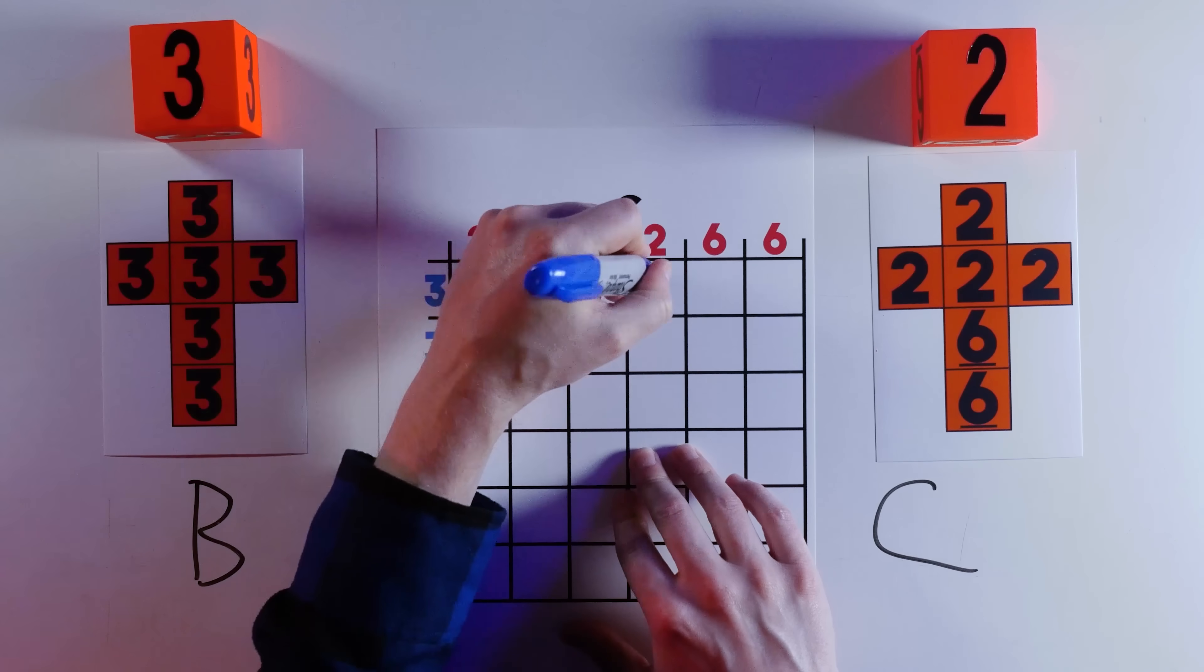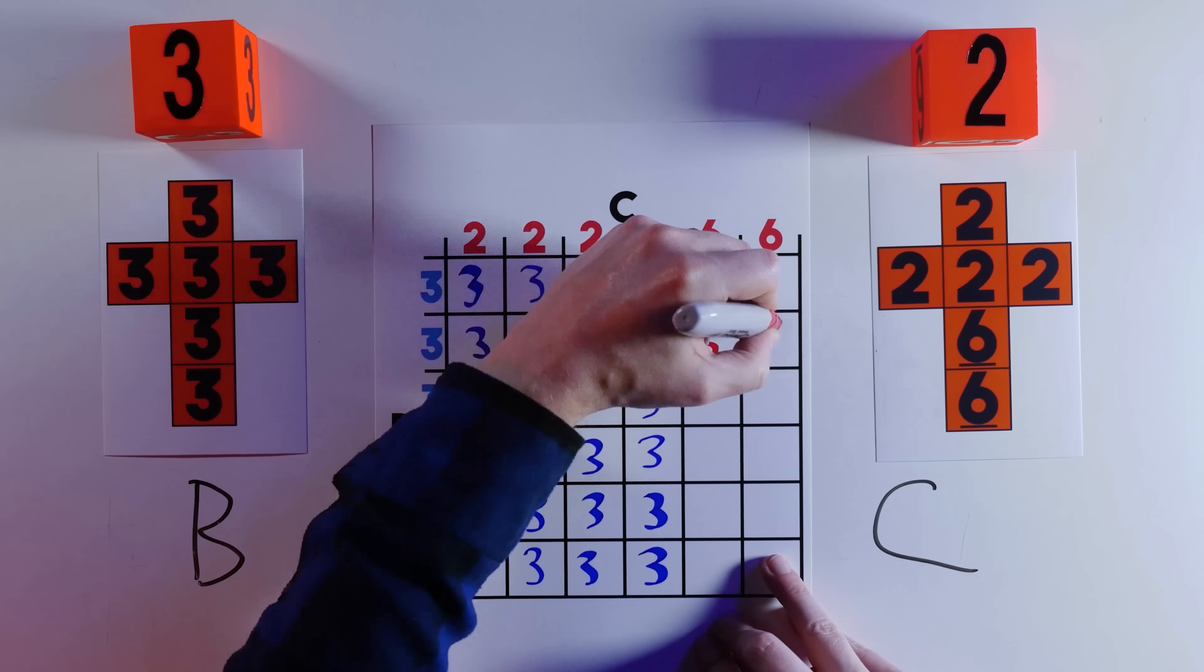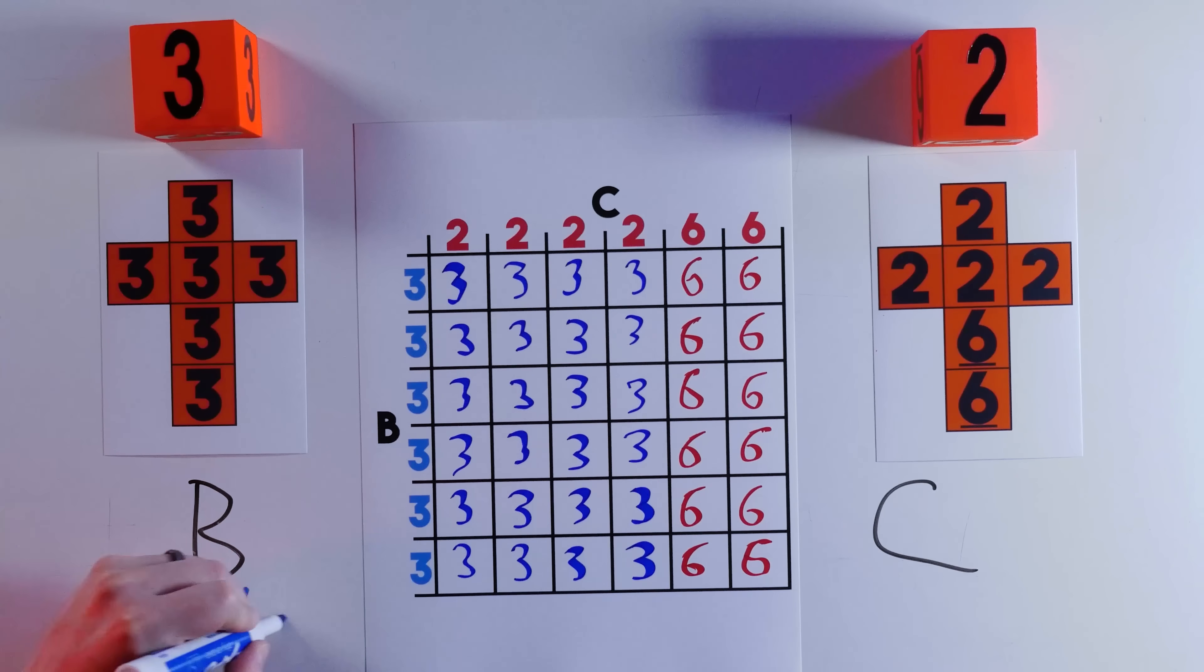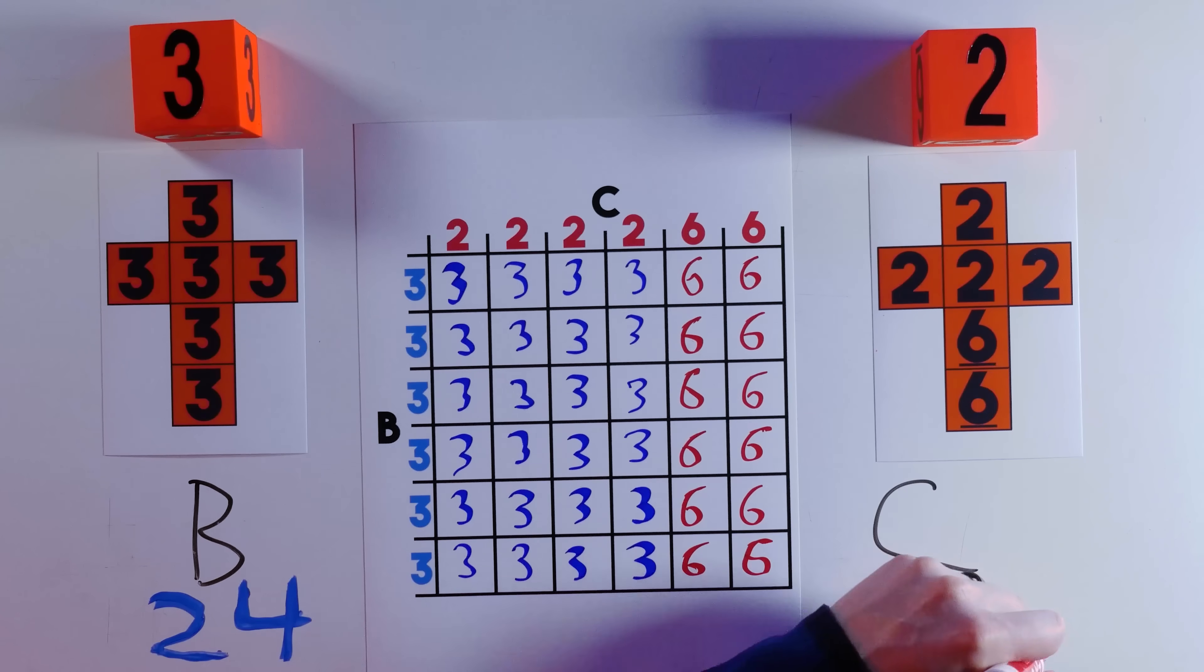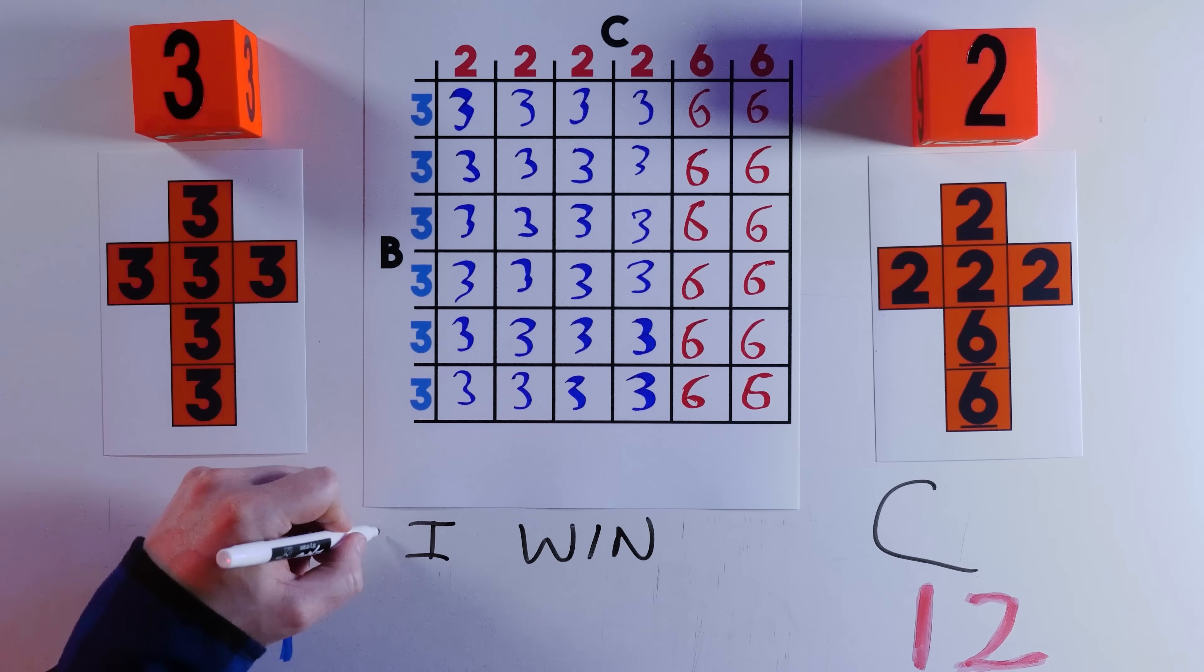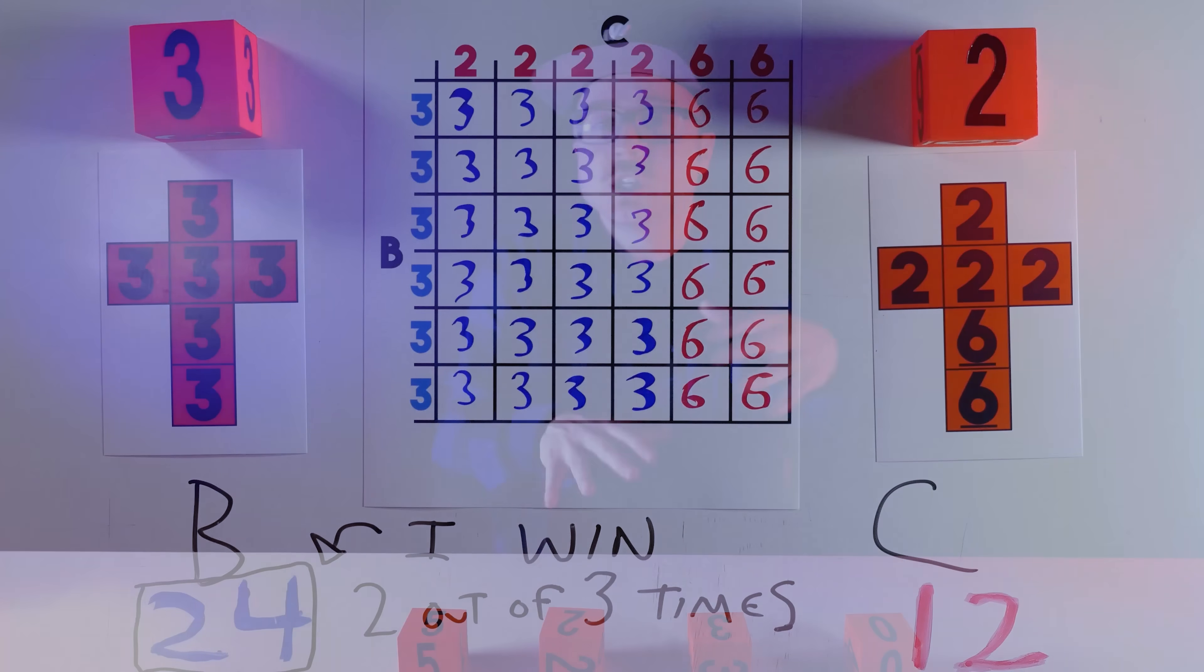And I'm gonna win most of the time. Look, here's a table of all the possible roles both of us can have. Of the 36 possible combinations of roles, B comes out on top 24 times to C's 12. You've chosen what looks like the best die, and I'll still beat you 2 out of 3 times.